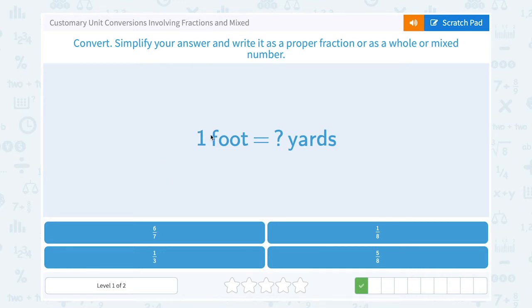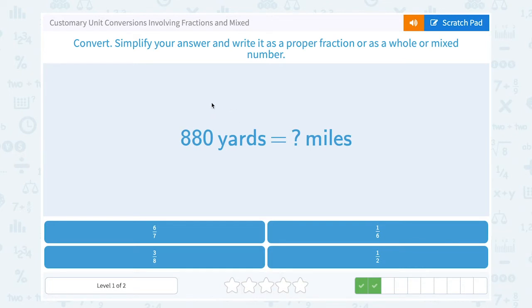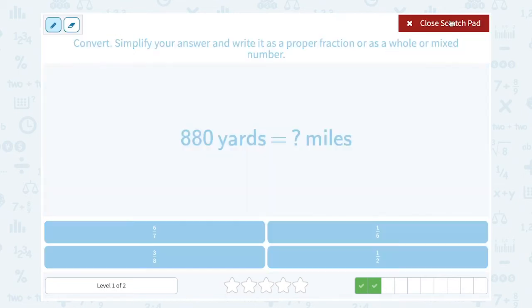Same thing again. We just said one foot is one-third of a yard. We have 880 yards and we want to know how many miles is that. We need to know the conversion that there are 1,760 yards in one mile.